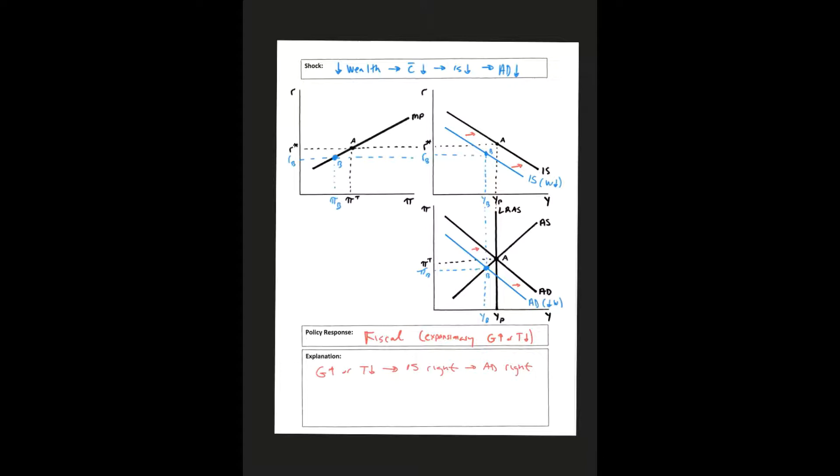So how will this show up? Well, what we're really trying to do is we're just trying to bring IS curve back to where it was. So we would see this being the IS curve prime, and A would be point C.